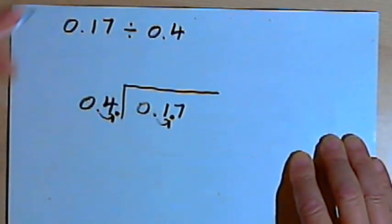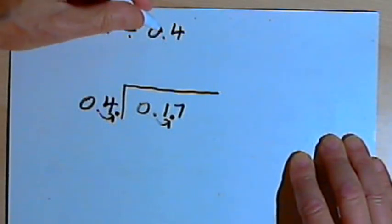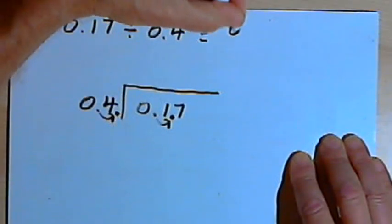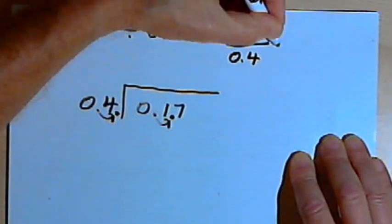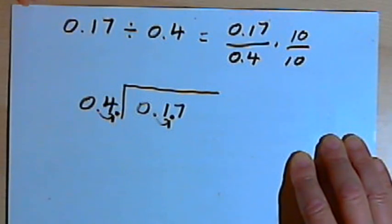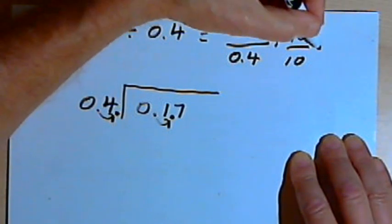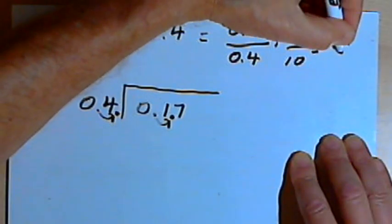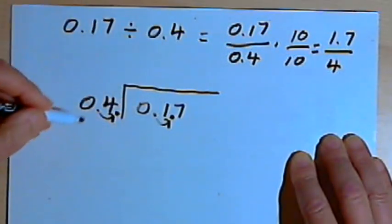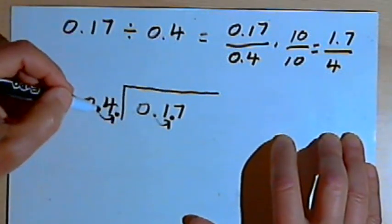Let me explain why I can do that. If I take the original problem, 0.17 divided by 0.4, I could write that as a fraction. I could write 0.17 over 0.4, and then I could multiply that fraction by 10 over 10, which is just multiplying it by 1. When I multiply by 10, I shift the decimal point one place over to the right. So the numerator is now going to become 1.7. The denominator will become a whole number, it'll become 4. So that's basically what I did down here where I set up my problem.